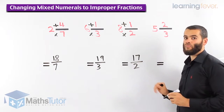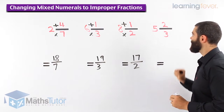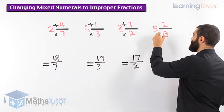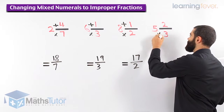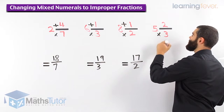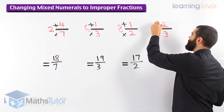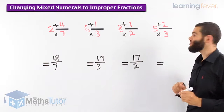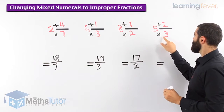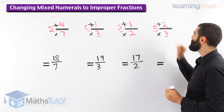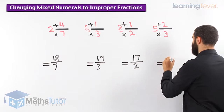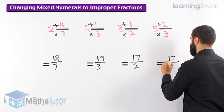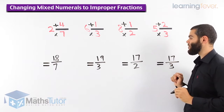Last one. We start with the denominator again. 3 times 5 is 15, plus 2. 3 times 5 is 15, plus 2 gives us 17 over 3.